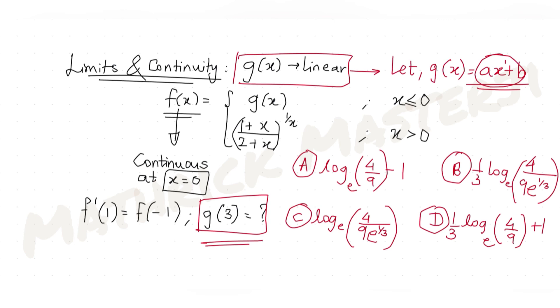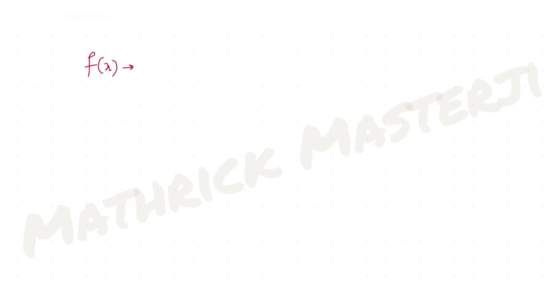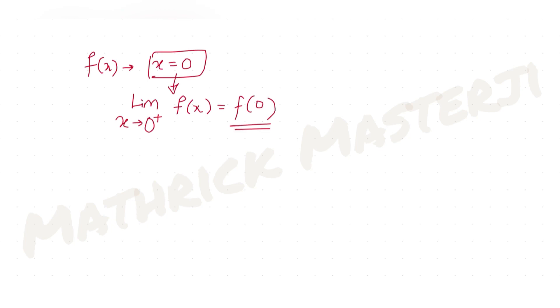f(x) equals g(x) for x less than or equal to 0. Since f is continuous at x = 0, the right-hand limit as x tends to 0+ must equal f(0), which must also equal the left-hand limit as x tends to 0 minus.